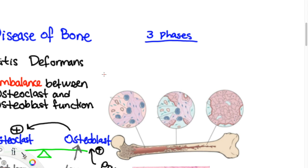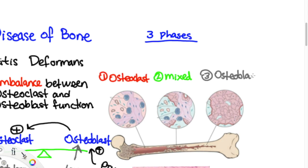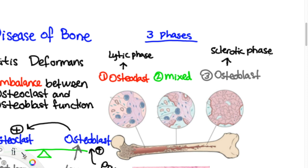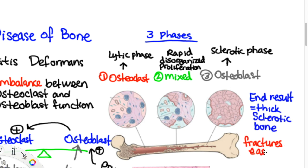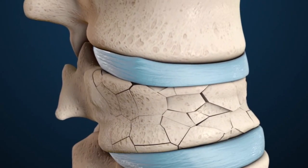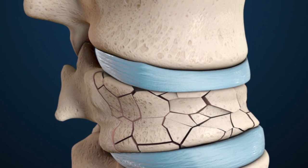There are three phases to this disease: osteoclastic, mixed, and osteoblastic. The first phase is also called the lytic phase, when osteoclasts continue to resorb bone, resulting in weak bones. The third phase is called the sclerotic phase, where osteoblasts lay down as much bone as possible but not in balance with osteoclast activity. The mixed phase is when osteoblasts compensate by laying down bone in a rapid, disorganized fashion.